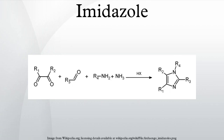Imidazole can be synthesized by numerous methods besides the Debus method. Many of these syntheses can also be applied to different substituted imidazoles and imidazole derivatives by varying the functional groups on the reactants. These methods are commonly categorized by which and how many bonds form to make the imidazole ring. For example, the Debus method forms the N bonds in imidazole, using each reactant as a fragment of the ring, making it a three-bond forming synthesis.